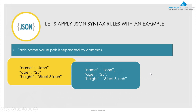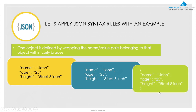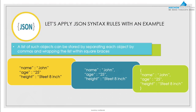Rule three: to denote one object, we wrap these name-value pairs in curly braces. This becomes one object — John's details — wrapped in curly braces. Rule four: to pass a list, multiple objects are stored by separating each object with commas.